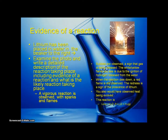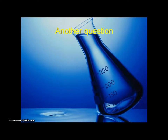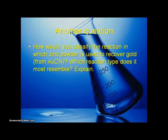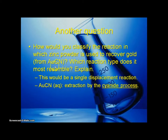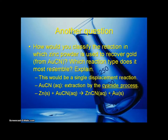Another question: how would you classify the reaction in which zinc powder is used to recover gold from gold cyanide? This would be a single displacement reaction. You're trying to knock out the gold to isolate it — zinc is much higher in the activity series and will displace the gold. This method of gold extraction is called the cyanide process, and the reaction is shown.